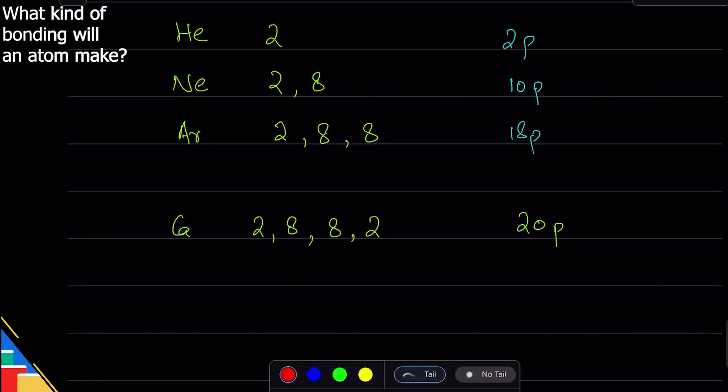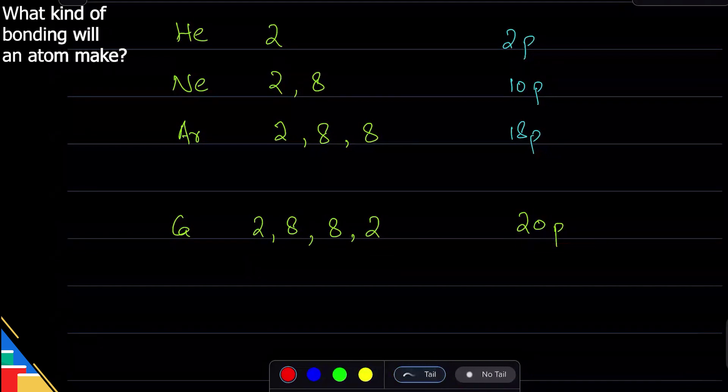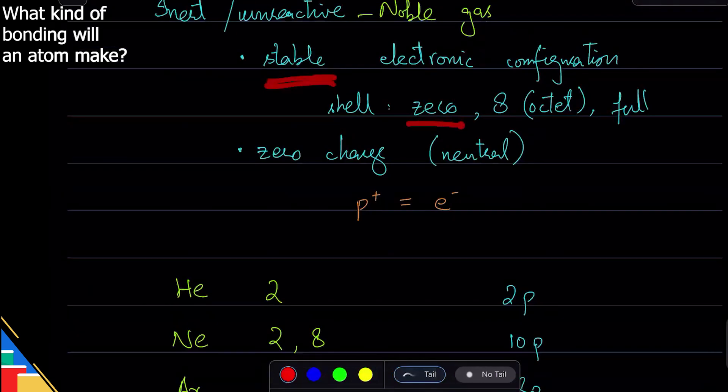This has zero charge - 20 electrons, 20 protons. But the last shell is not stable. It is not zero, it is not 8, and it's obviously not full because the last shell can hold 32. What do they do? They do bonding.